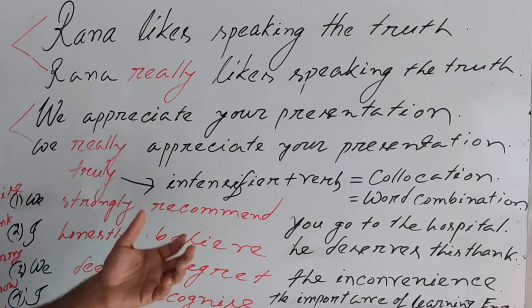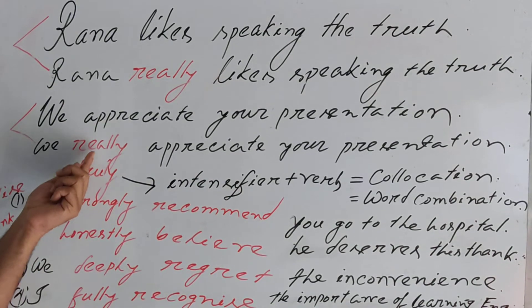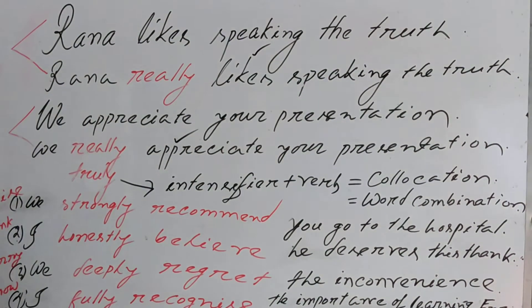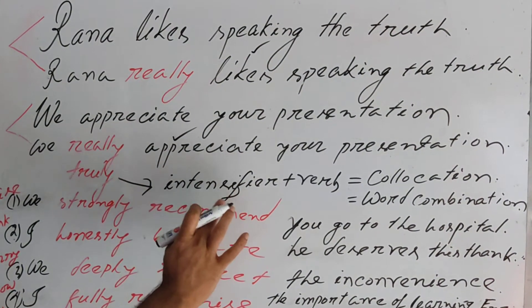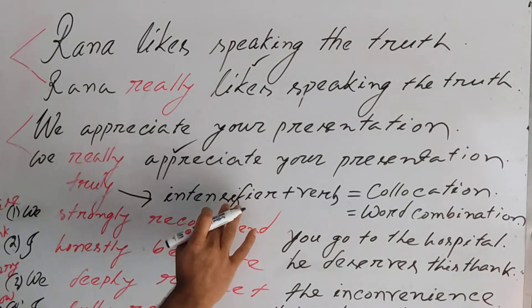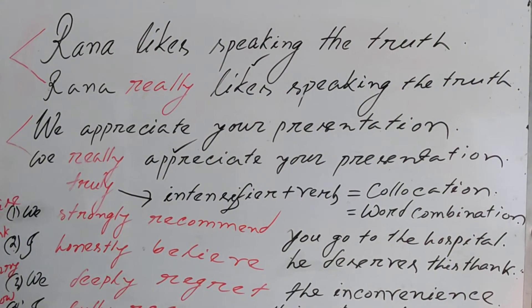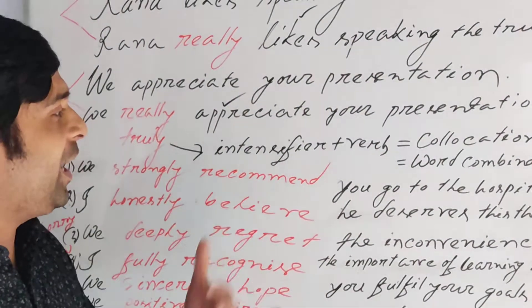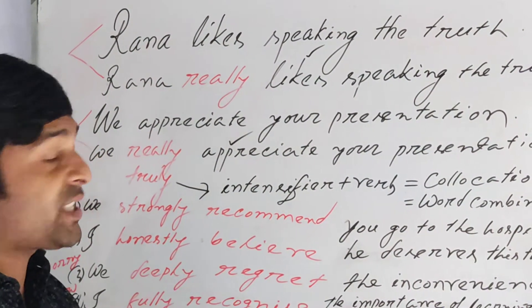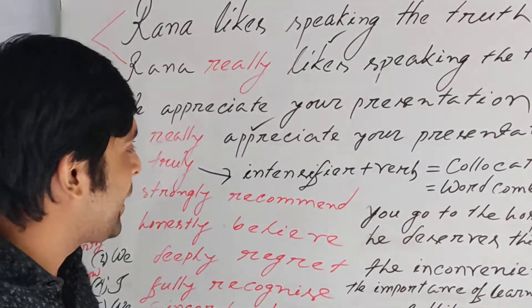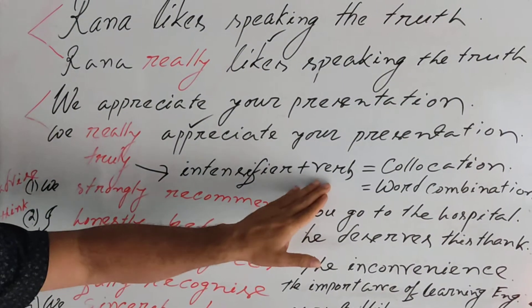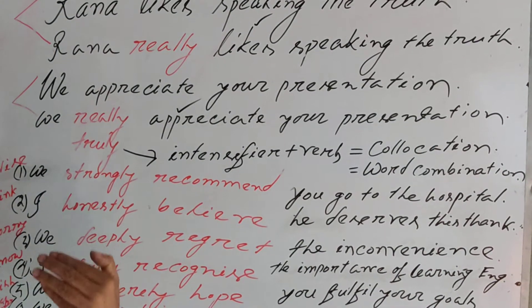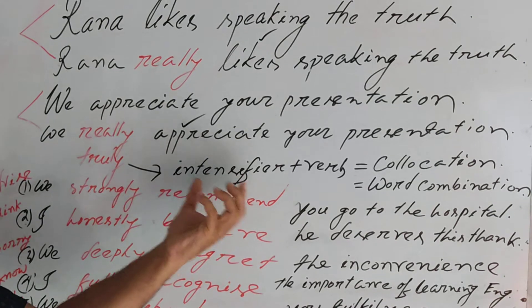Let's understand the exact idea. The intensifiers here are 'really' and 'truly.' After the intensifier I have used 'appreciate' and 'likes,' which are the principal verbs. So the pattern is: intensifier plus principal verb. This combination is called a collocation, and it helps every student express themselves spontaneously. Before the principal verb, we use the intensifier — that is very clear.